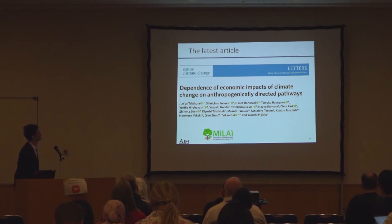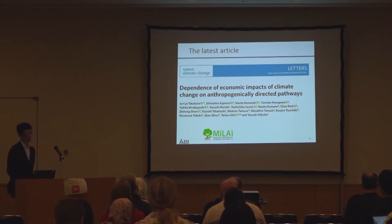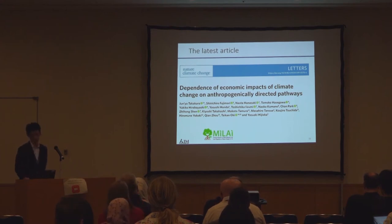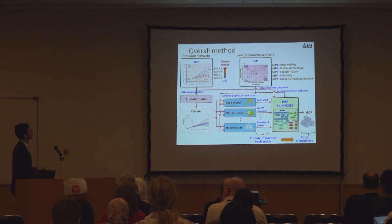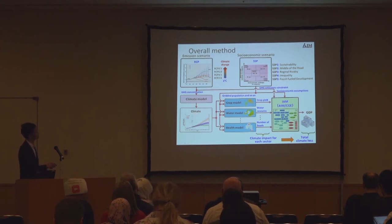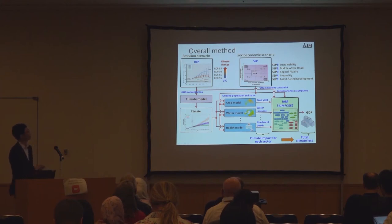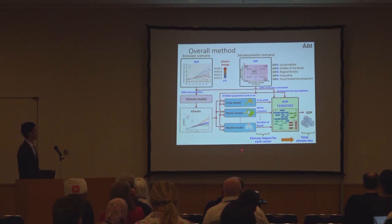I would like to introduce our study, which was published two months ago in Nature Climate Change. It incorporates more sectors, more scenarios, and puts them into our CGE model. This is the overall methodology of our approach, and the basic structure is pretty similar to other studies. But we have multi-scenarios in terms of climate scenarios and socioeconomic scenarios, and we consider multi-GCMs, putting all the information into physical or biophysical sectoral models. Finally, the CGE was operated to generate the total climate impact losses.